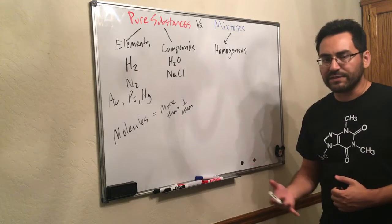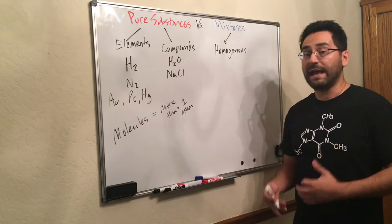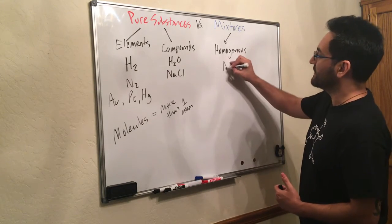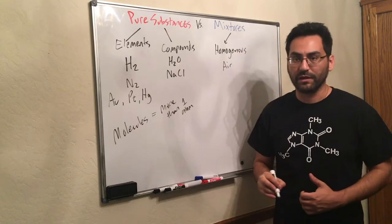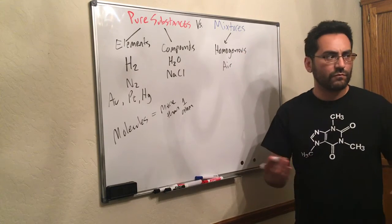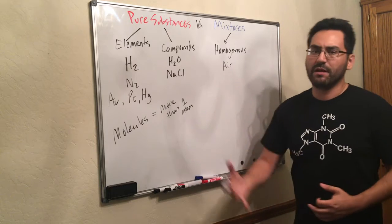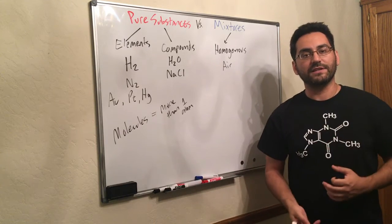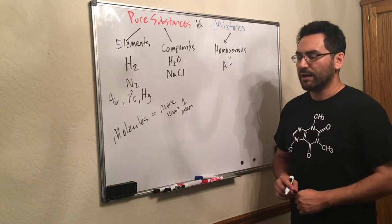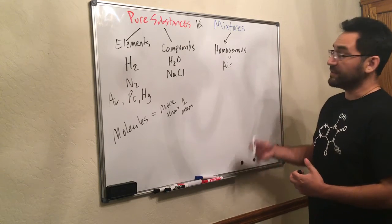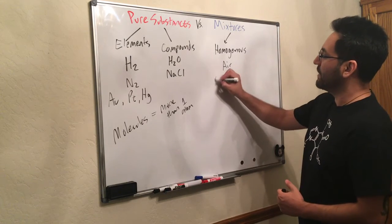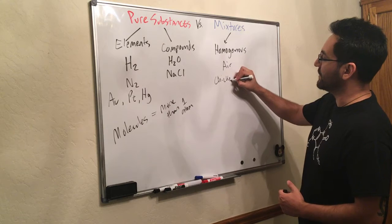So let's think of some things that are evenly mixed. Air, for example, is a homogeneous mixture. Bottled water is probably a homogeneous mixture if it has ions in it. But let's say chicken broth. Chicken broth would be a homogeneous mixture.